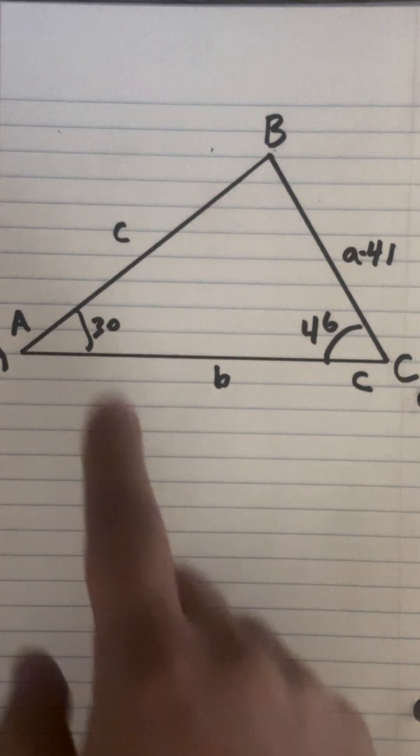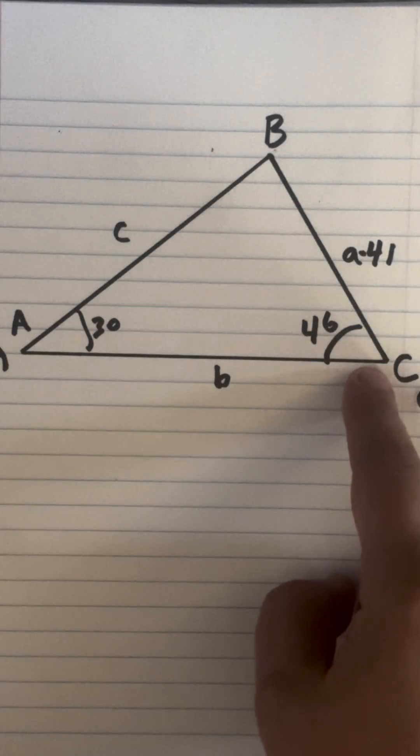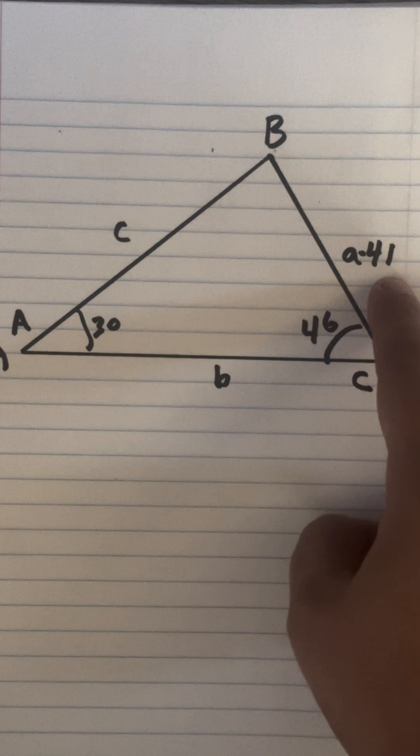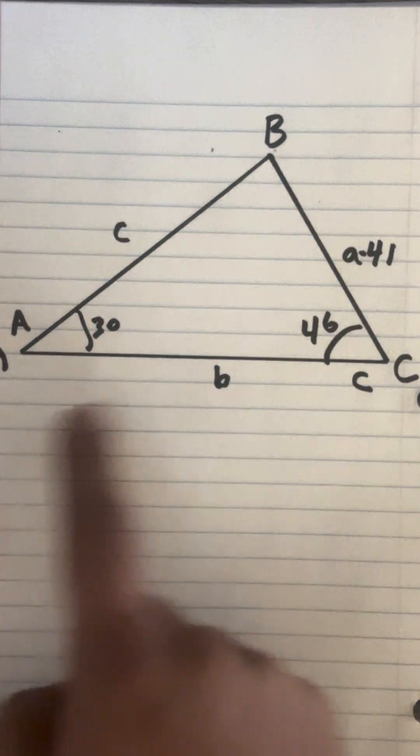With this obtuse triangle we have angles A and C known and side A is known. So what we need to figure out is angle B and side C and B.